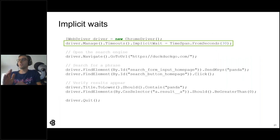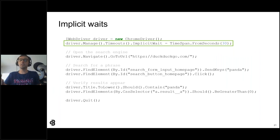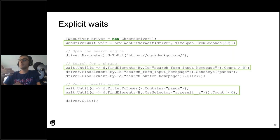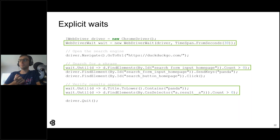You could set an implicit wait that will make calls wait until target elements appear, but they don't work for all cases, such as the title. Explicit waits provide much more control over waiting, timeout, and conditions. They use a WebDriverWait object with a preset timeout value and must be placed explicitly throughout the code — in the three spots where race conditions could happen.